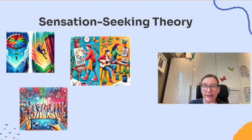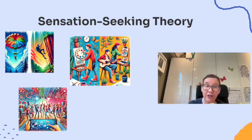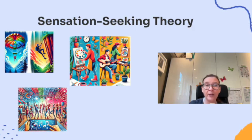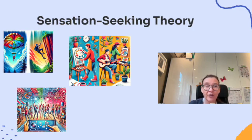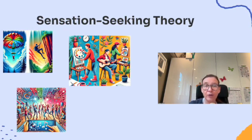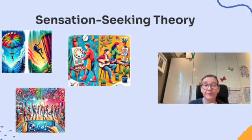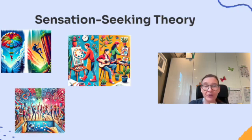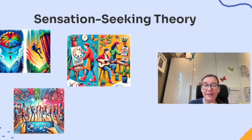Next is sensation seeking theory — the idea that some people are motivated by the need for novel, exciting, or even risky behavior. Not everyone feels this need to the same degree. There are four types. First, experience seeking: enjoying new or unusual activities like traveling to unfamiliar places or trying a unique hobby. Second, thrill and adventure seeking: being drawn to physical risks like skydiving or rock climbing. Third, disinhibition: seeking social stimulation or risky behaviors like enjoying spontaneous parties or last-minute plans.